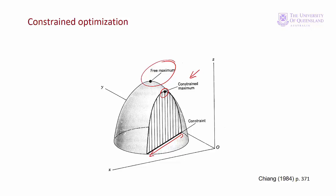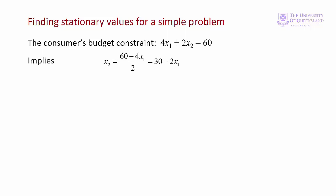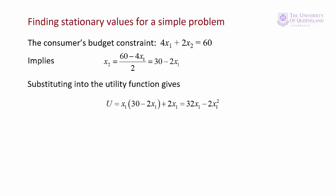Let's return to our coffee and cookies example. In a simple problem like this we can rearrange the objective function and solve it using unconstrained optimization. First we take the budget constraint and solve for x2, giving us x2 in terms of x1. We substitute for x2 in the objective function, so now we have utility as a function of x1. That takes care of the mutual dependence and gives us a function of one variable that we can optimize.